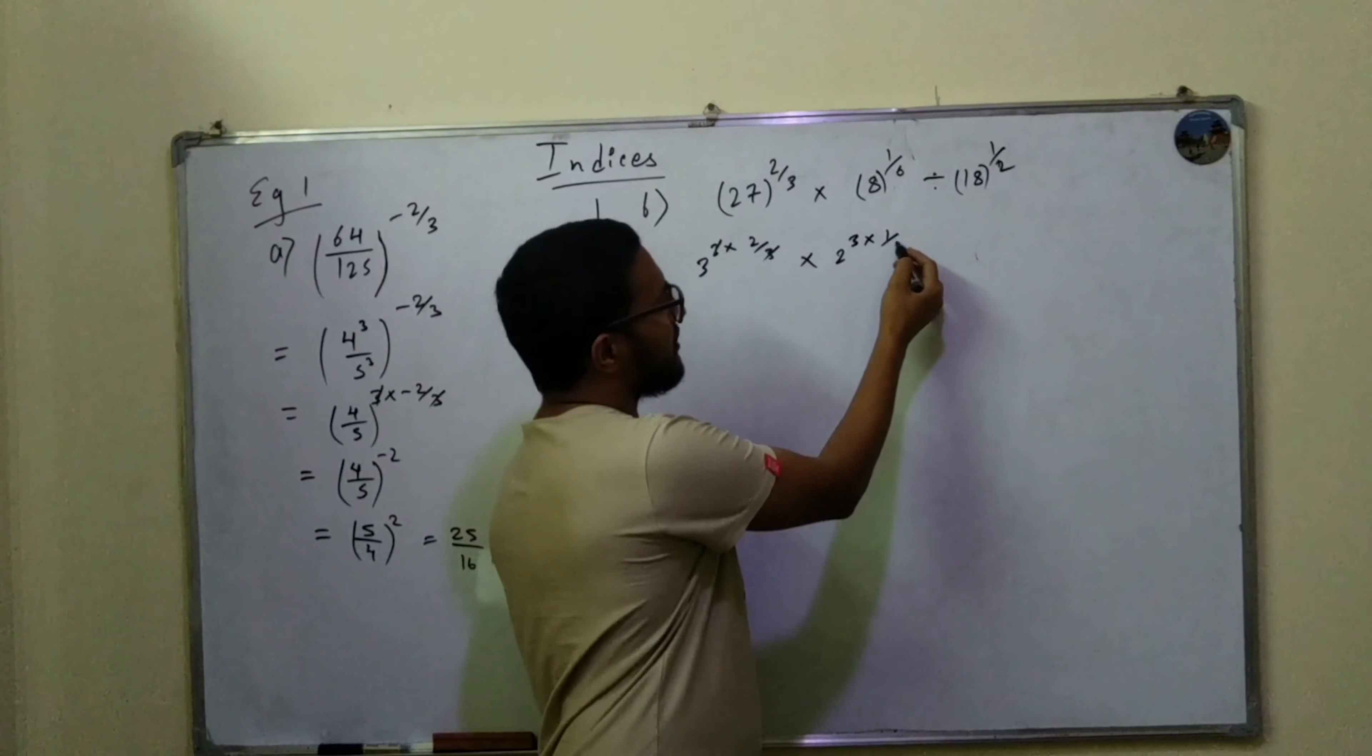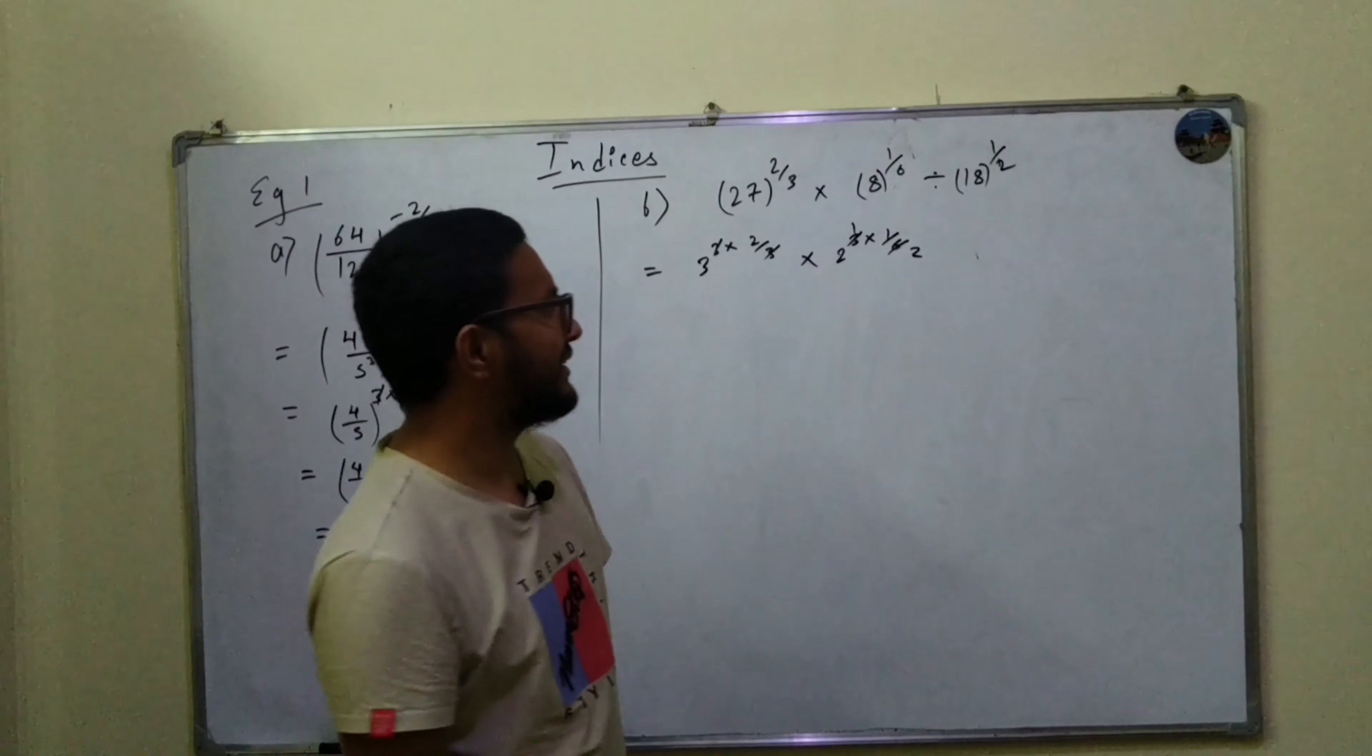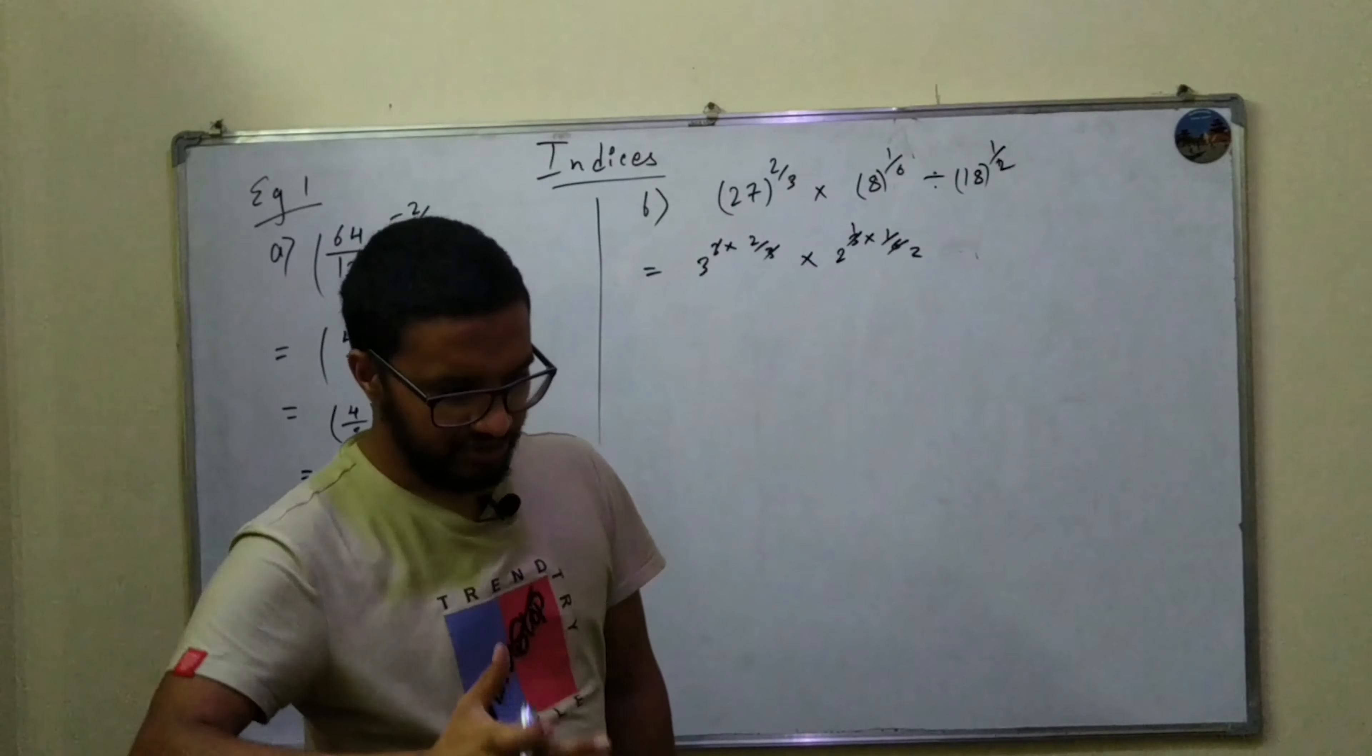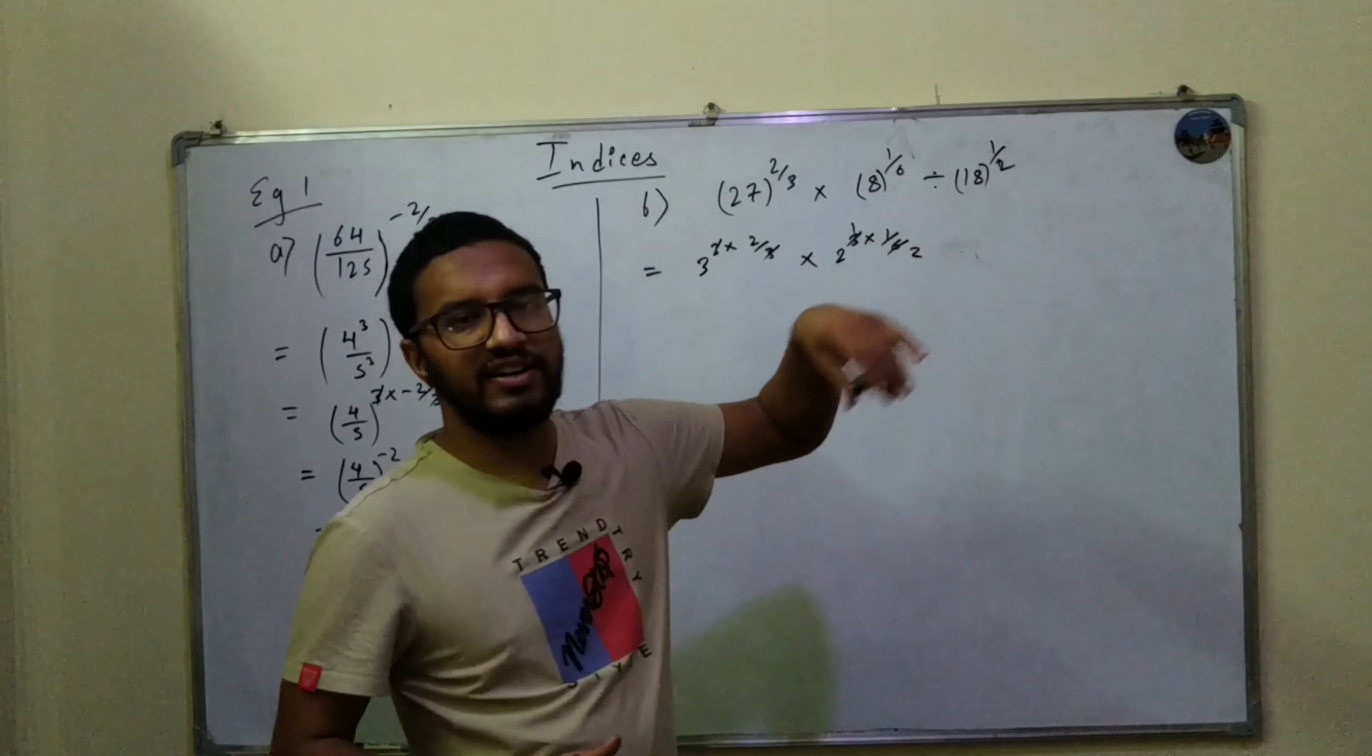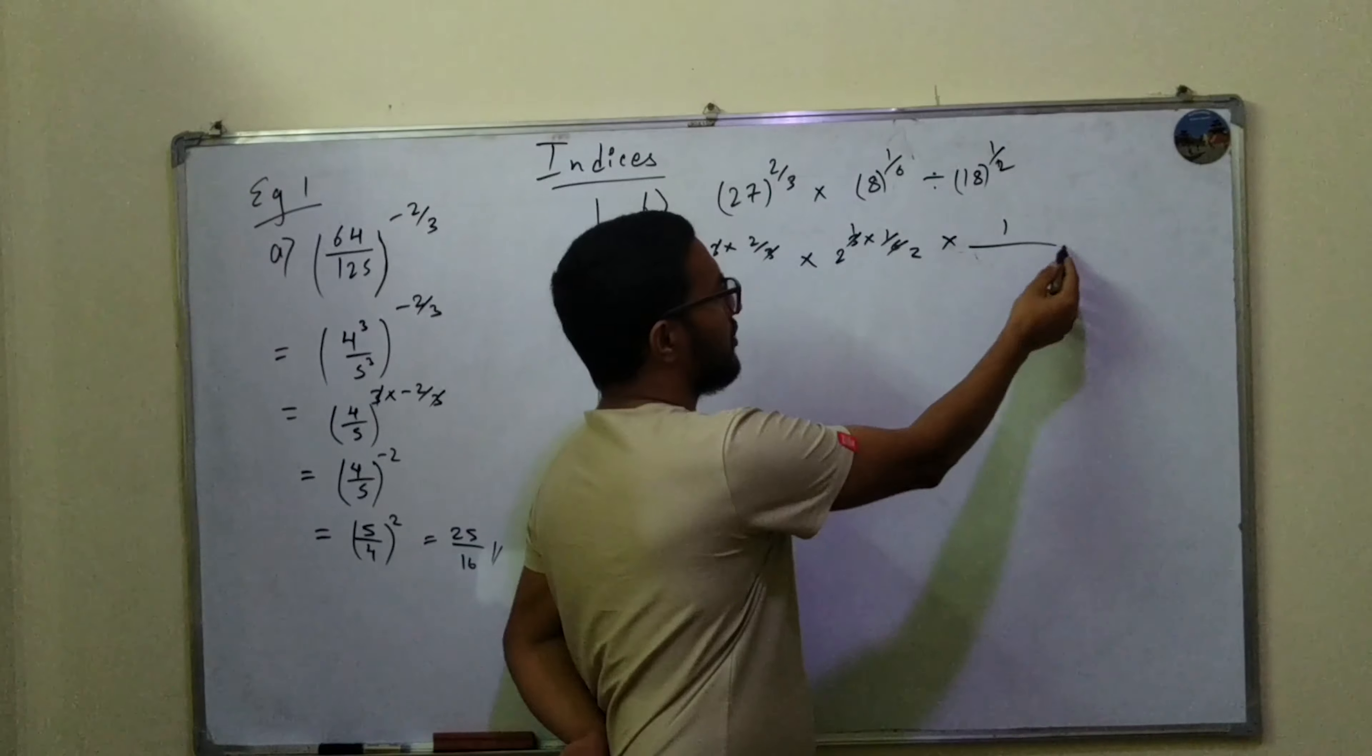2 cubed times 1 by 6, so 1, 2, 3. Divide by 4. What we can do is basically change the divide into multiplication.